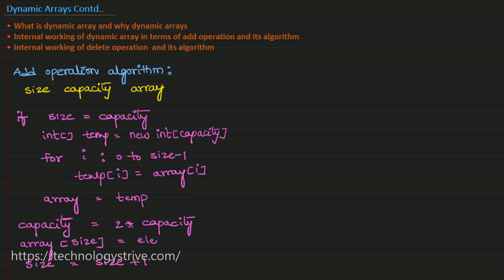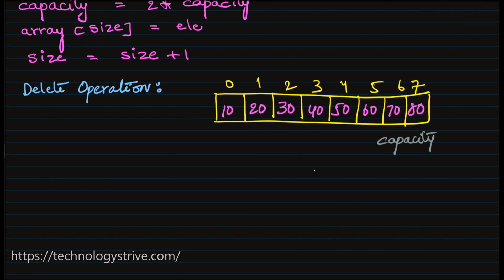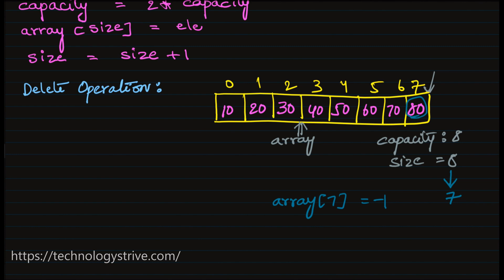First, let's understand when we have to shrink the array in size. Whenever we are having frequent deletions — to understand the delete operation, let's assume that we already have an array of capacity 8 and size 8, because all 8 elements have been occupied. Suppose if I want to delete 80, what we will do: the size has to be decreased to 7. We just delete this element from this position — we update array[7] to some invalid value.